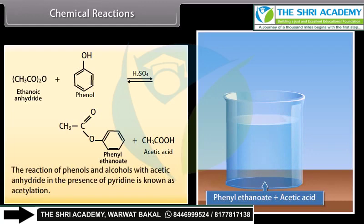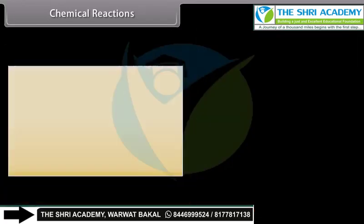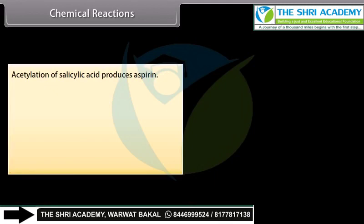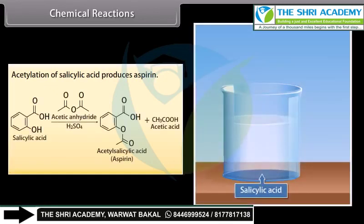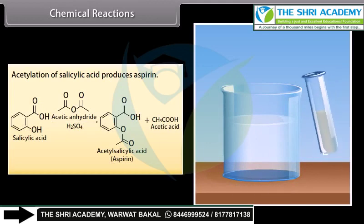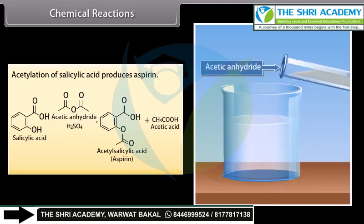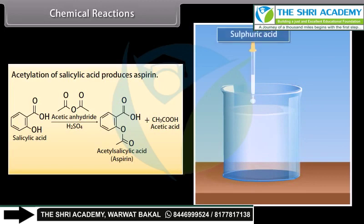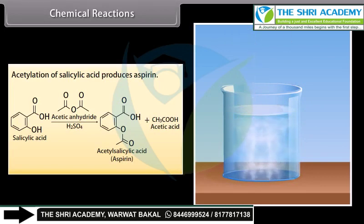The reaction of phenols and alcohols with acetic anhydride in the presence of pyridine is known as acetylation. Acetylation of salicylic acid produces aspirin. Acetic anhydride reacts with salicylic acid in the presence of sulfuric acid to form acetylsalicylic acid or aspirin and acetic acid.